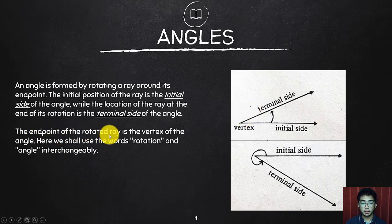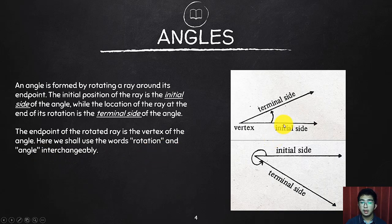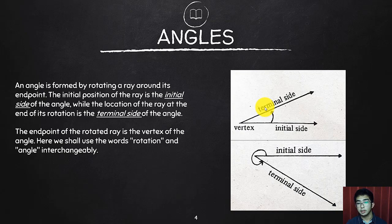An angle is formed by rotating a ray around its endpoint. The initial position of the ray is the initial side, while the location of the ray at the end of its rotation is the terminal side of the angle. The endpoint of the ray is the vertex of the angle. We shall use the words rotation and angle interchangeably, since when forming an angle, we are rotating a terminal side from the initial side.